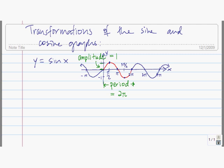The key to graphing sine and cosine functions is to be able to graph one cycle and then it keeps repeating in the exact same fashion. In general, the easiest way to complete a cycle — to graph one full cycle — is to think about these five key points. If we can plot these five key points, it's very easy to get the graph. The five key points are the three x-intercepts of the cycle and the maximum and the minimum of the cycle.